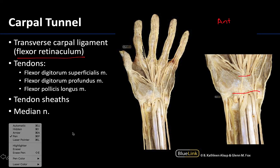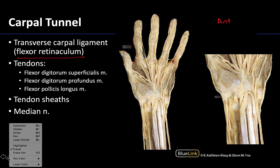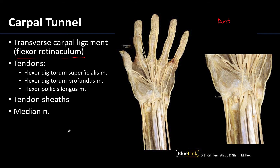Let me erase this right here so we can get into some of those. The roof is going to be that transverse carpal ligament, and now we need to figure out what is going on inside. There is a lot going on in a pretty small region, and the majority of what is going on are tendons.